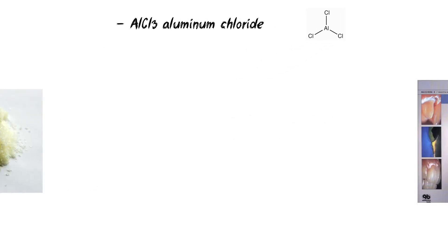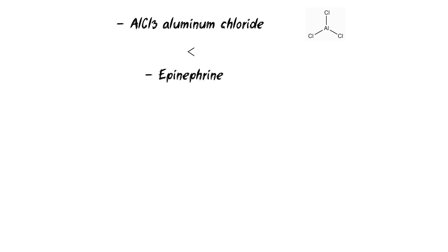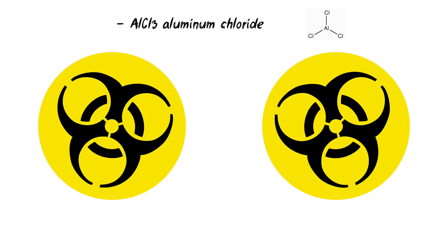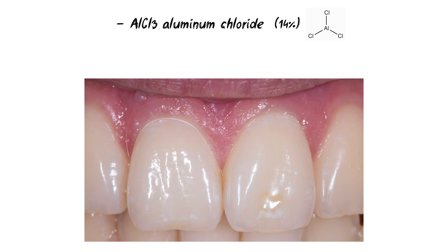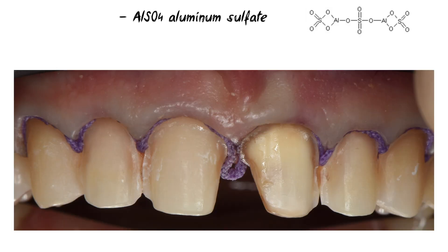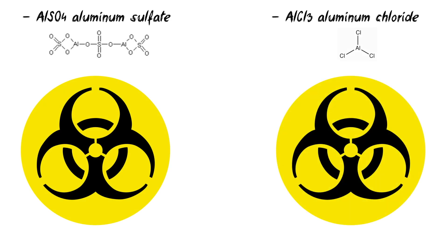The most popular astringents are aluminum chloride and aluminum sulfate, and among vasoconstrictors it's of course epinephrine. Aluminum chloride does not cause systemic side effects but its retractive ability is inferior to epinephrine. It has the lowest cytotoxicity, and at concentrations of more than 14 percent it can lead to recession of the gingival margin.